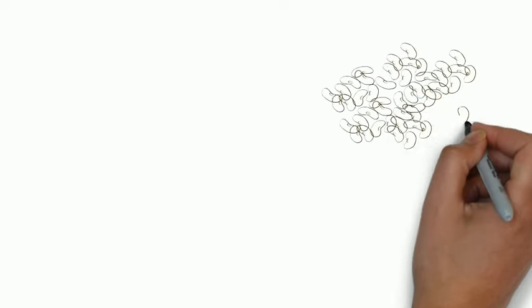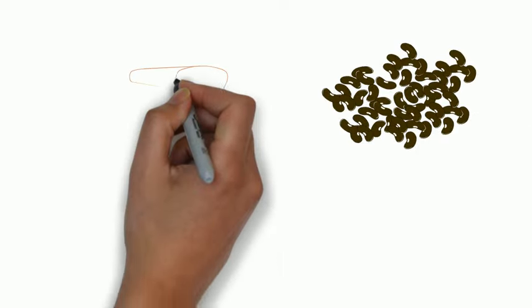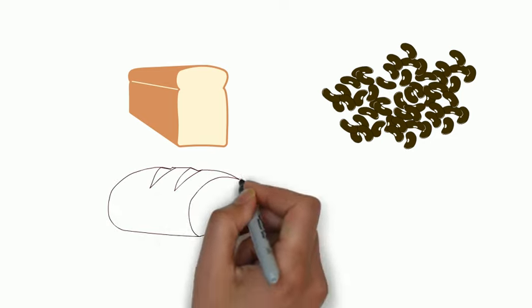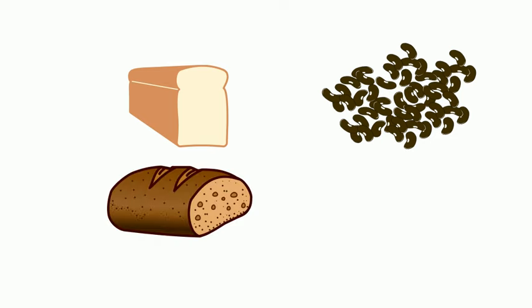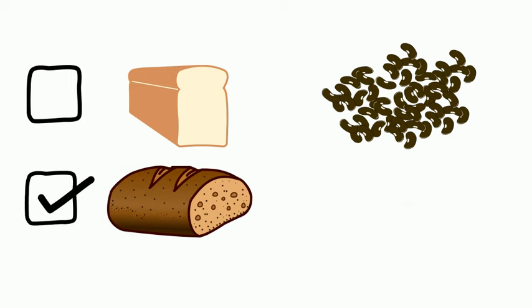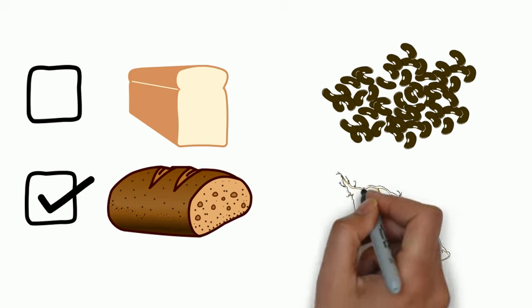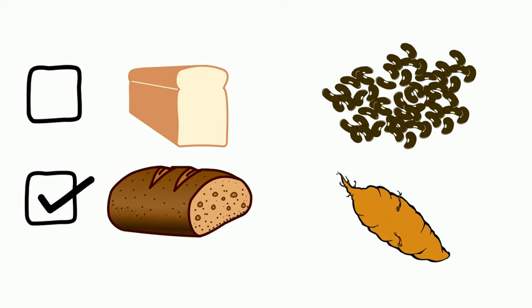The remaining fourth of your plate is for a starch or carbohydrate. This could be rice, pasta, bread, or potatoes. Try to choose whole grain pasta, bread, or brown rice. These provide more fiber than plain white bread, pasta, or rice. Sweet potatoes, or yams, provide more nutrients and fiber than a white potato. Just be careful not to add extra sugar or a lot of butter.